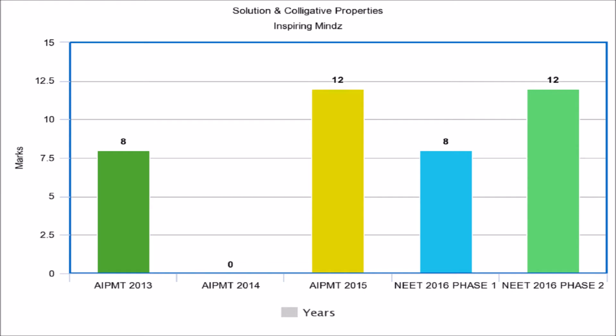The next important topic is atomic system. The weightage for this chapter was 8 marks in AIPMD 2013. In AIPMD 2014, no questions were asked. In AIPMD 2015, 12 marks of questions were asked. In NEET 2016 Phase 1, 8 marks were asked, and in NEET 2016 Phase 2, 12 marks of questions were asked.